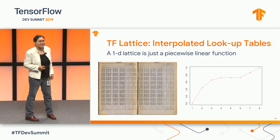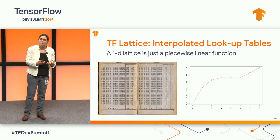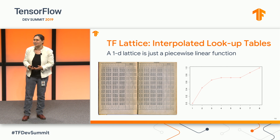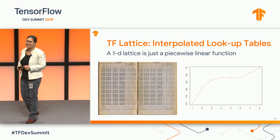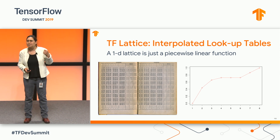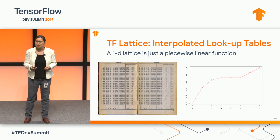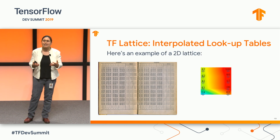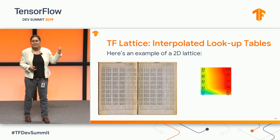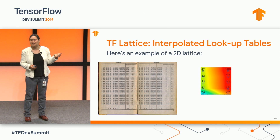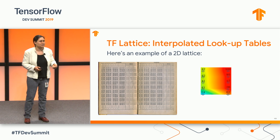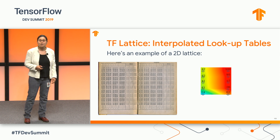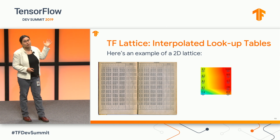How does the TF Lattice package do it? Under the hood, the kind of function class it's using are lattices — these are just interpolated lookup tables. This is possibly the oldest way humanity has for representing functions. You've seen these in the back of your math textbooks and in actuarial tables from the 1960s. In a one-dimensional space, these are simply piecewise linear functions. With the TF Lattice package, you can represent high-dimensional functions with these multi-dimensional lattices. The lookup table parameter values are trained using empirical risk minimization — the same training you'd see with DNNs — and this structure makes it much easier to control monotonicity.